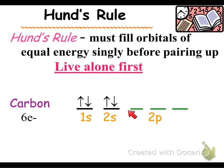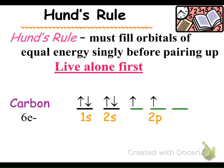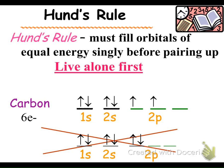With three twin bed options in 2p, we say live alone first. So we write one up arrow in the first orbital, and instead of immediately adding a down arrow, we move to the next available spot and write another up arrow, and then another. Carbon would not be drawn with paired electrons in 2p because there is an opportunity to fill energy levels singly first before pairing up.